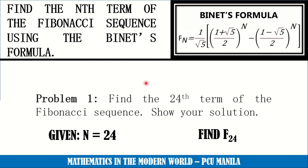Let us apply this formula in finding the answer for problem number one: Find the 24th term of the Fibonacci sequence and show your solution. The solution that we will be using is with the calculator. Since we are looking for the 24th term, then the value of n is equal to 24.